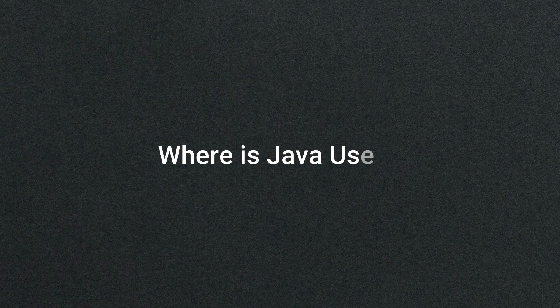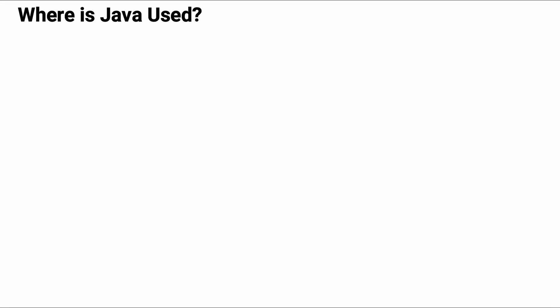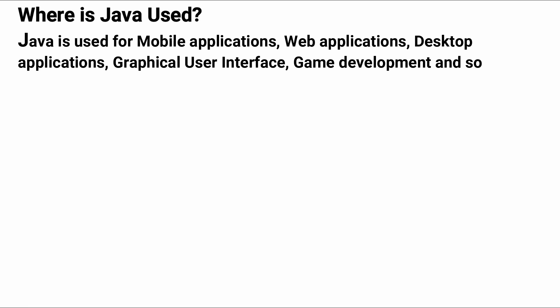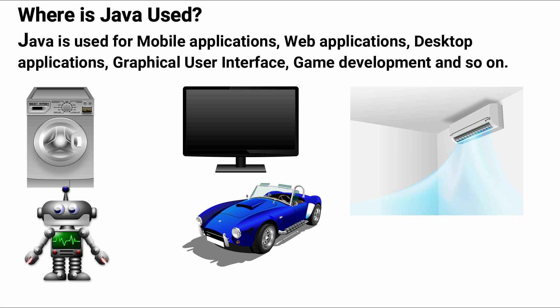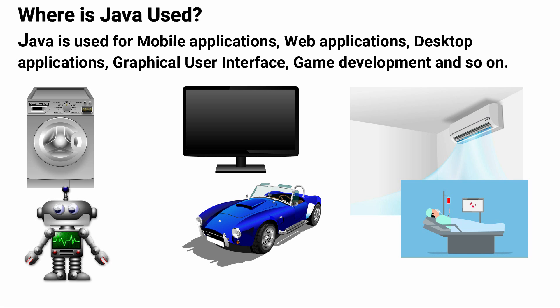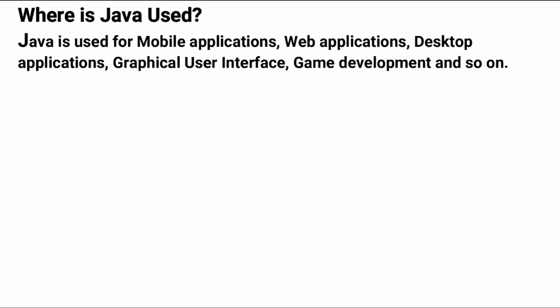Now the biggest question arises: where is Java used? Java is used for mobile applications, web applications, desktop applications, graphical user interface, and game development. In the last decade, it is not only used in mobile, desktop, web and game development, but also used in washing machines, TVs, air conditioners, robotics, car navigation systems, medical monitoring devices and so on. That is the reason Java is the world's most popular programming language used in modern technology. According to Oracle, 51 billion devices run the Java Virtual Machine.